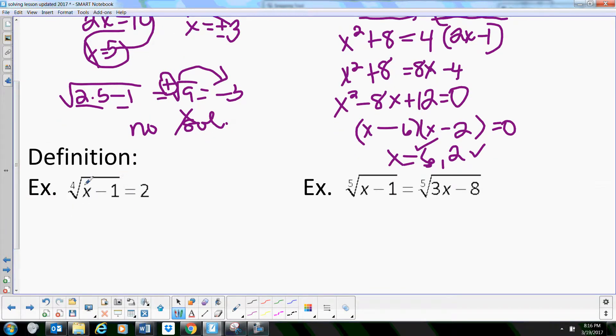Now what happens if we have a fourth degree? Okay, so we isolate the radical as we do the other ones. So the radical is isolated but this time we're going to raise it to the nth power which this time the nth power is the fourth power. So let's raise both sides to the fourth. That leaves us with x minus 1 is equal to 2 times 2 is 4 times 2 is 8 times 2 is 16.